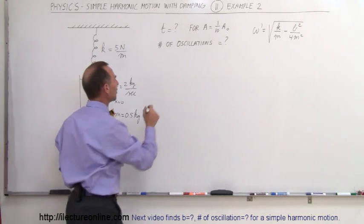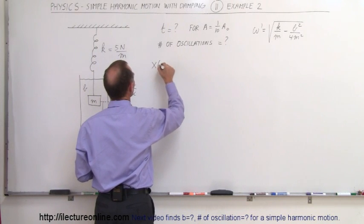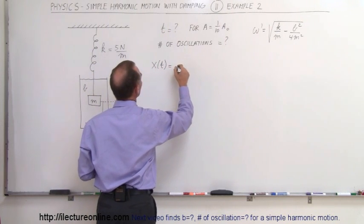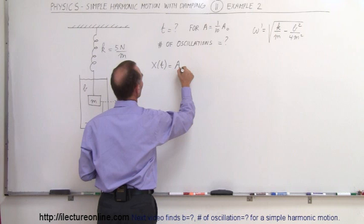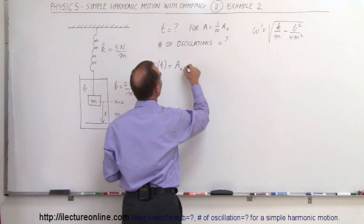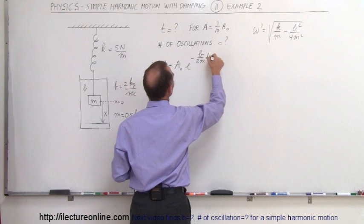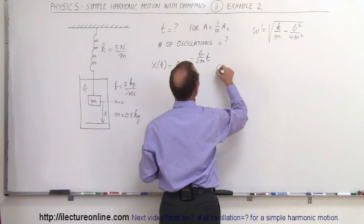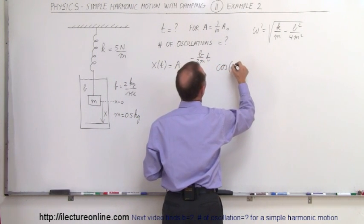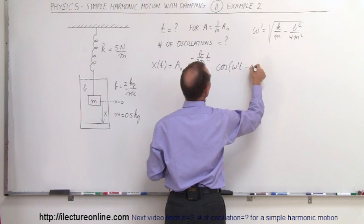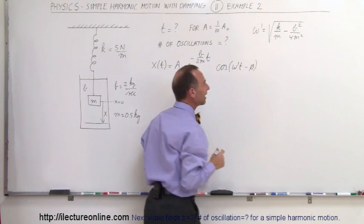Secondly, we need the equation describing the motion. So we have x as a function of time is equal to the amplitude, so let's say the original amplitude, times e to the minus b over 2m times t times the cosine of omega prime t minus the phase angle.